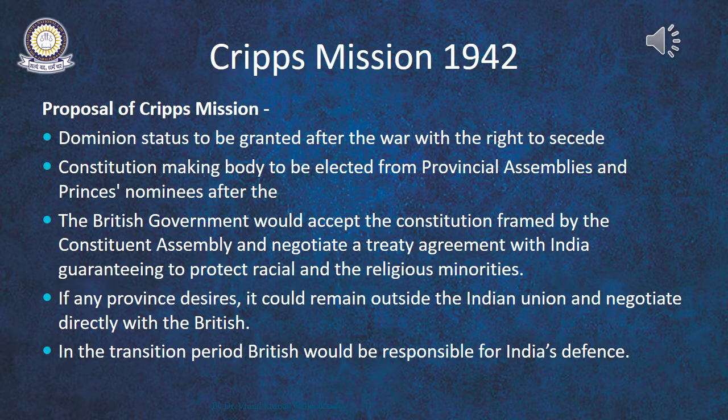The Indian leaders released from prisons in early December were also worried about India's defense and were once again ready to fully cooperate in the war effort if India was granted the substance of power. The British government was also under pressure from its American and Chinese allies. This resulted in another set of negotiations between the British government, the Indian National Congress, and the Muslim League — known as the Cripps Mission. Let us look into the proposals of this mission.